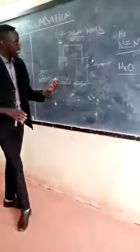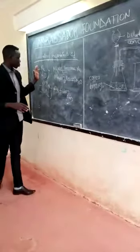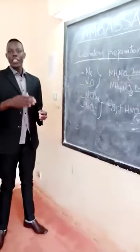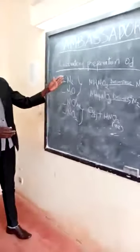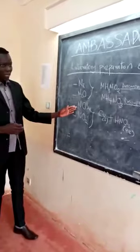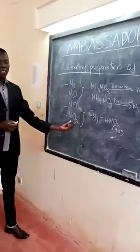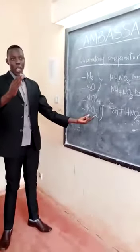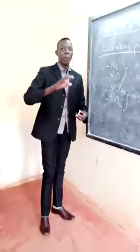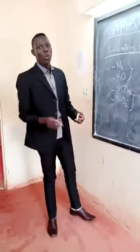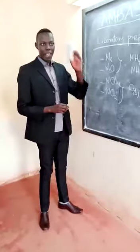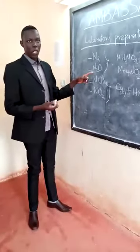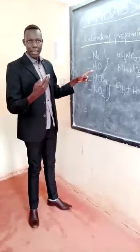Concerning their physical properties, some of them are the same. For example, the first three are colorless — you cannot see them. But nitrogen 4 oxide is a brown gas, you can see it. Physical properties are properties you can detect with your five common senses — maybe you can see them or smell them.